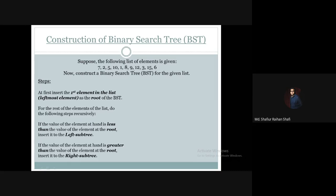Now let's construct the binary search tree. The list of elements starts with 7, so 7 becomes the root of the binary search tree — we insert 7 as the root. Then we take 2. We compare 2 with the root: 2 is obviously less than 7, so 2 will go to the left subtree, just like this.